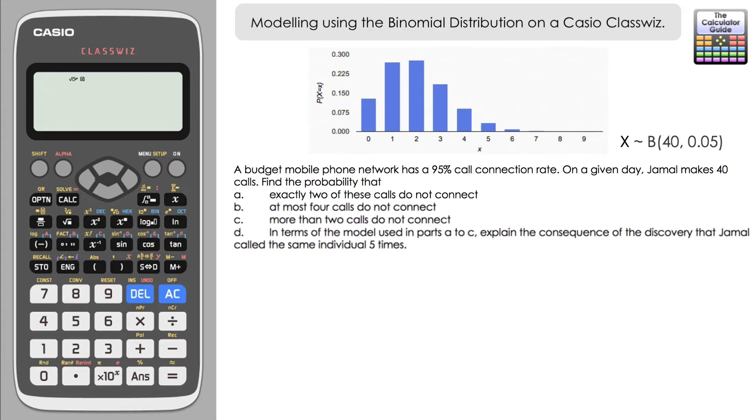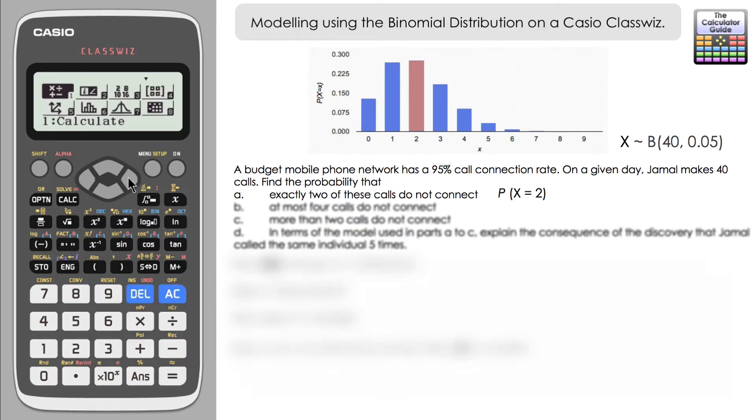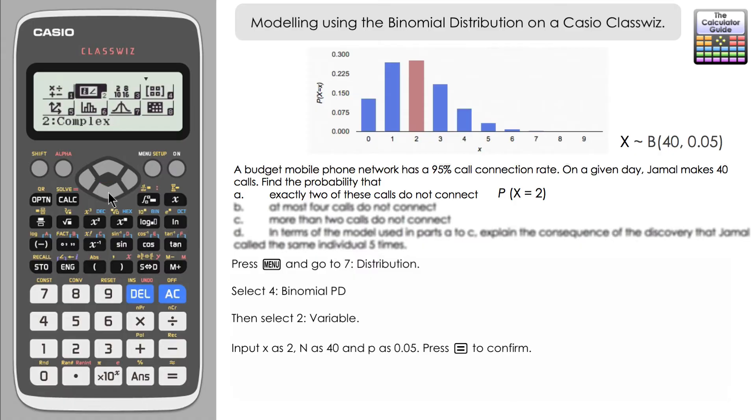So the first question, the part a here, we need to find out the probability of exactly two of these calls do not connect. So exactly two of these calls don't connect. So we're going to navigate to distribution mode and press equals. Now because it's got exactly two of these calls, we are going to need binomial PD binomial probability distribution to find out the exact value for two calls.